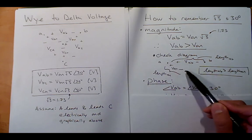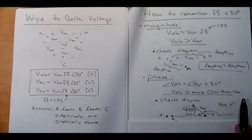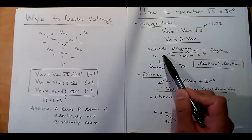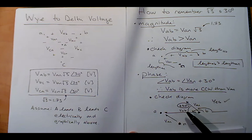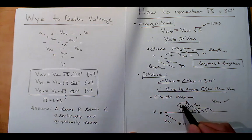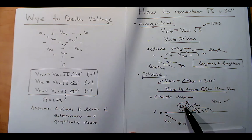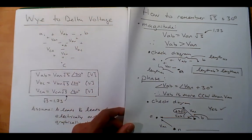What about the phase? If we assume a positive sequence, you can see that VAB is more counterclockwise than VAN on the phasor diagram. Think of minus-to-plus as an arrow — VAB is leading VAN. You can see that VAB leads by 30 degrees. At least remember that there's a 30-degree relationship and whether it's leading or lagging depends on whether you assume a positive or negative sequence. We're going to assume a positive sequence for a consistent frame of reference.